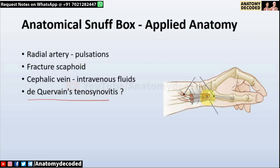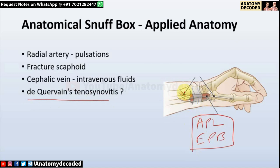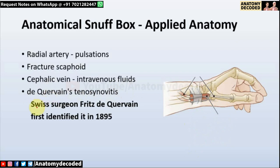There is also a condition called de Quervain's tenosynovitis, in which the tendons of abductor pollicis longus and extensor pollicis brevis become inflamed, causing pain and tenderness in the region of the anatomical snuff box. It is named after Swiss surgeon Fritz de Quervain, who first described this condition.